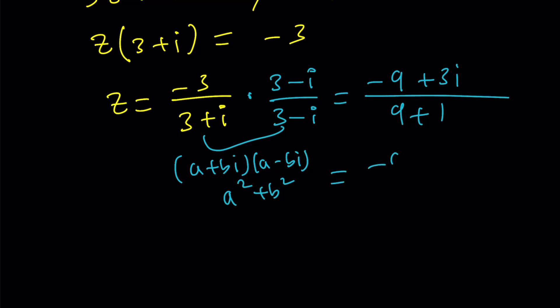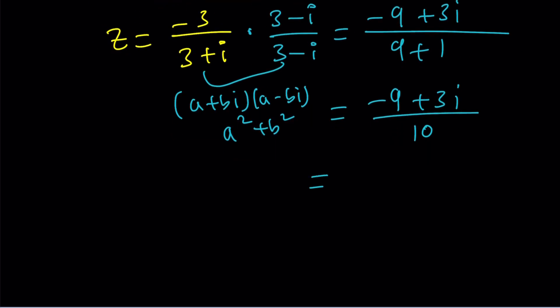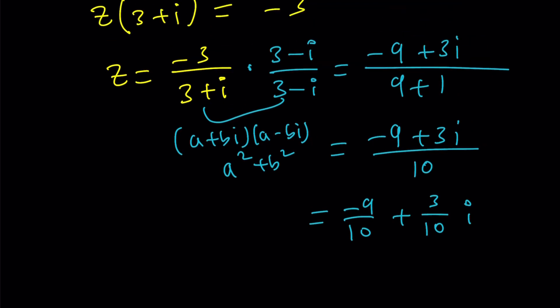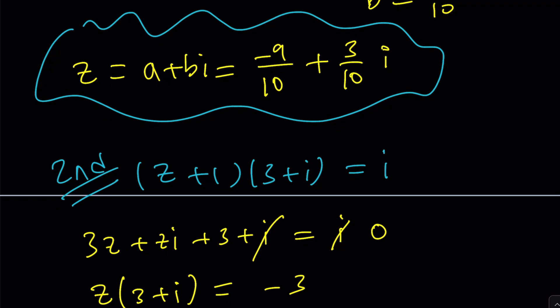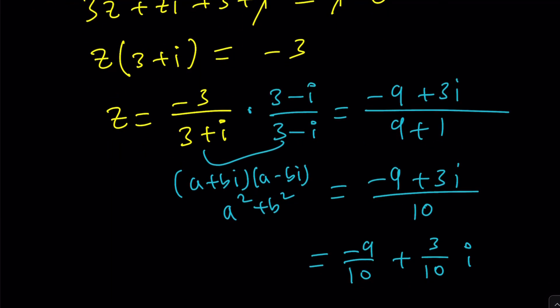So this becomes negative 9 plus 3I divided by 10. And then you can definitely separate this into negative 9 over 10 plus 3 over 10 I. Let's go ahead and compare this to our first method to make sure that we got the exact same answer. And yay, we did. Isn't that awesome? We got the same answer. And we should, obviously, because it's the same problem.